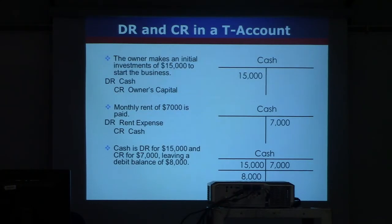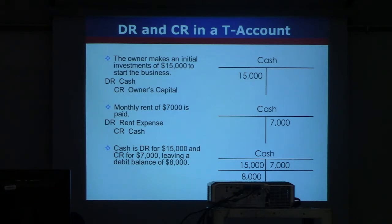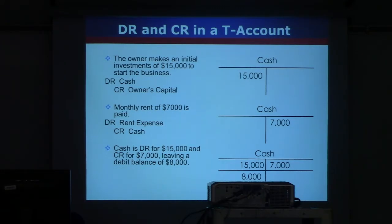The next slide shows an example of how a T-account is used. If someone makes an initial investment of $15,000 cash, you can see what happens to the T-account. There's a debit on the left — you put debit cash and credit owner's capital. Cash is debited $15,000 and owner's capital is credited $15,000. But right now we're talking about cash only, so cash is debited $15,000. The next transaction is monthly rent of $7,000.